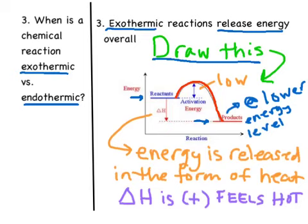When the energy is being released in an exothermic reaction, it's being released in the form of heat. That's why exothermic reactions feel hot, because we have a change in heat — delta H — which is positive. So an exothermic reaction is going to feel hot to the touch.